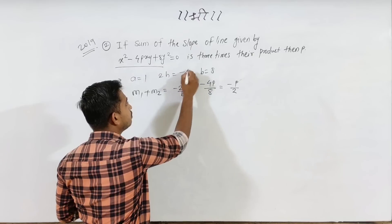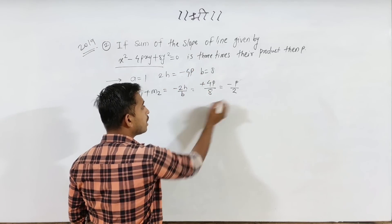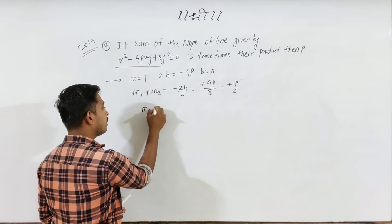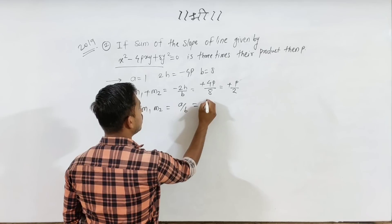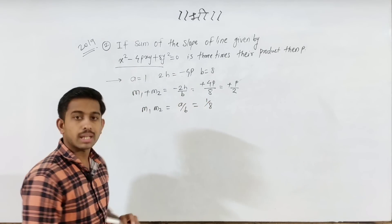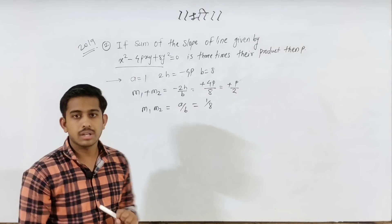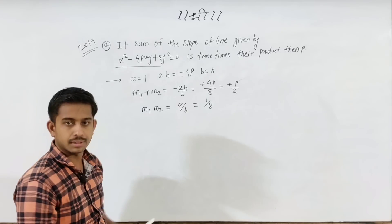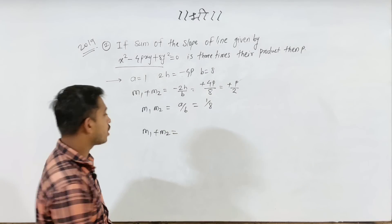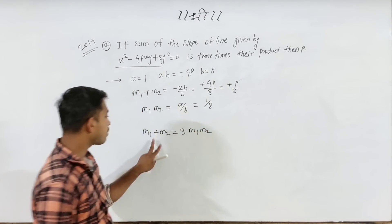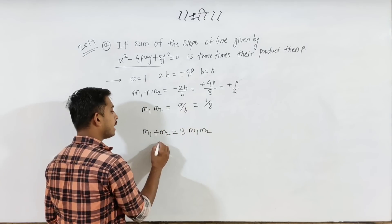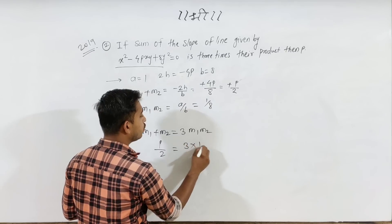And m1·m2 = a/b = 1/8. Applying the condition that the sum of the slopes equals 3 times their product: m1 + m2 = 3 × m1·m2, so −p/2 = 3 × (1/8).